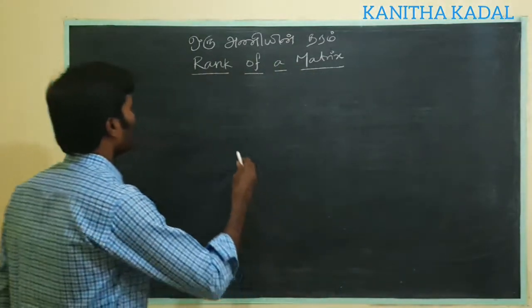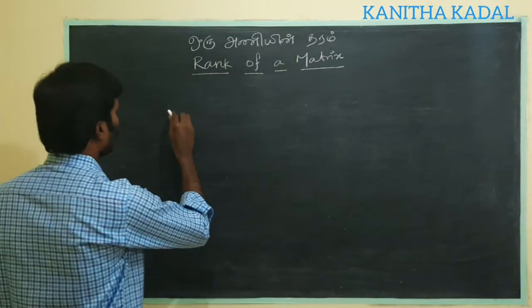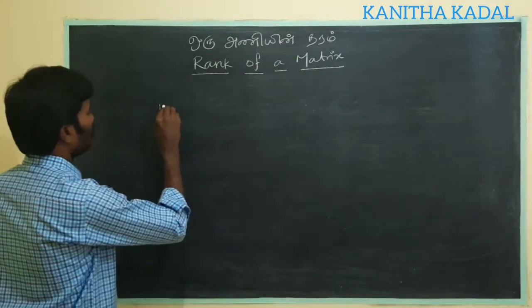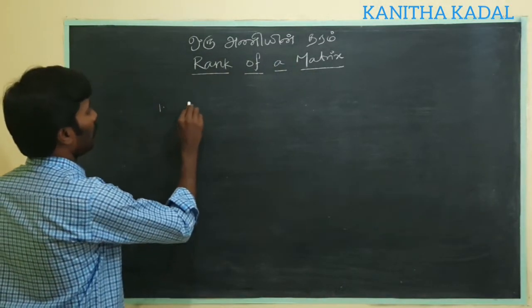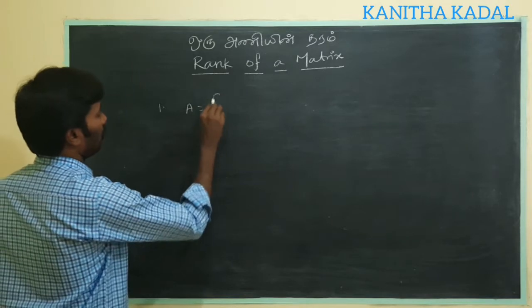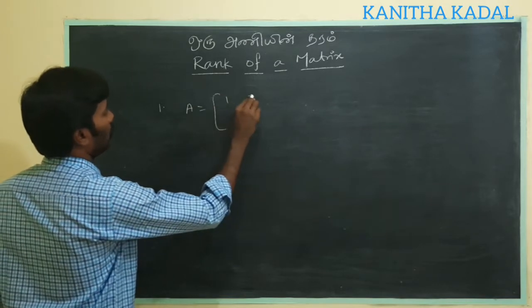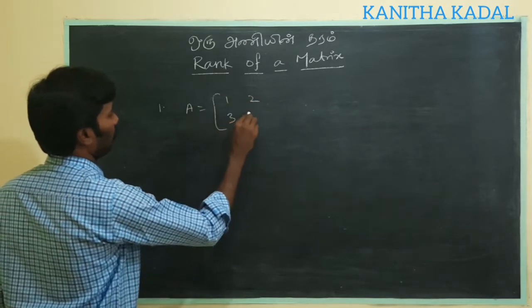First, we have a matrix. A is equal to 1, 2, 3, 4.